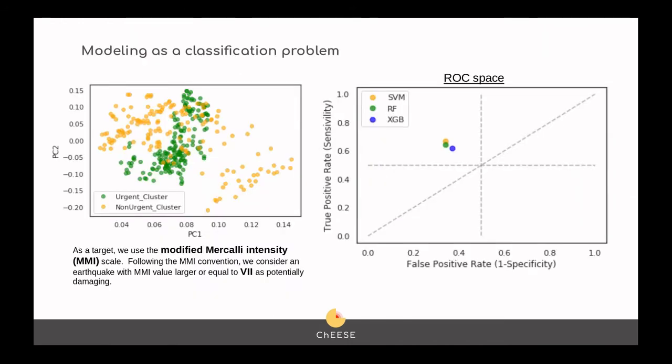Once the features were selected, we analyzed our problem as a classification task, using as a target the Modified Mercalli Intensity scale, and we defined a threshold of 7 that indicates a very strong earthquake. We used three different classification algorithms: Random Forest, Support Vector Machine, and XGBoost.